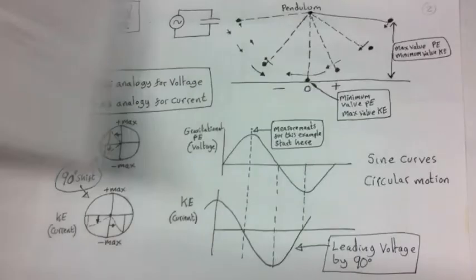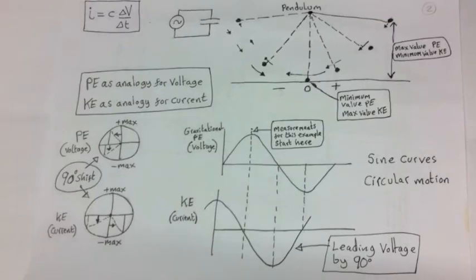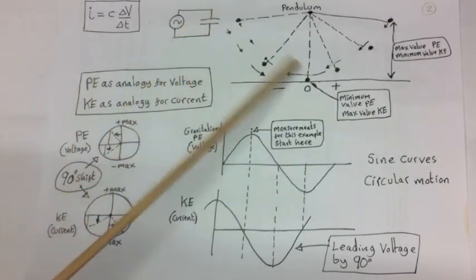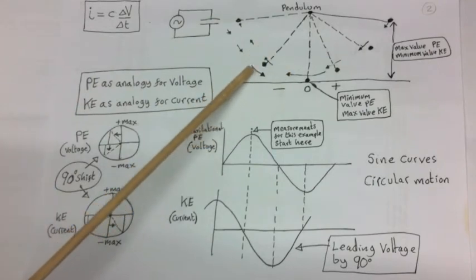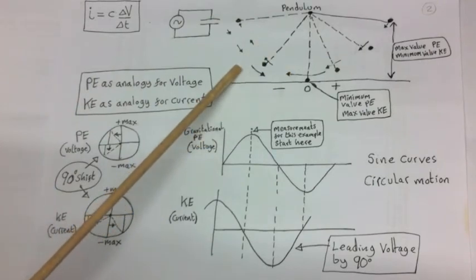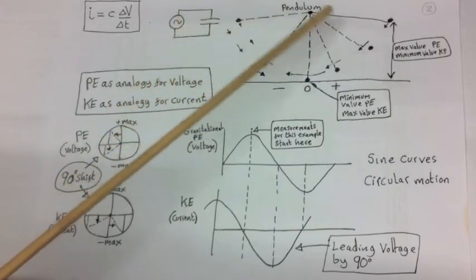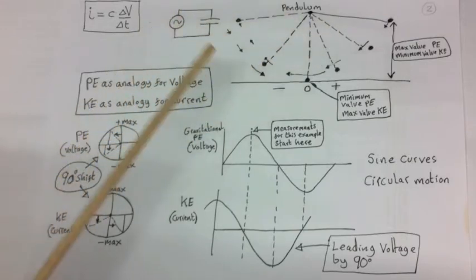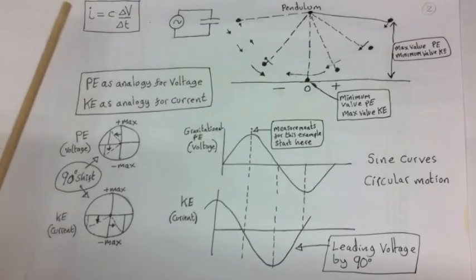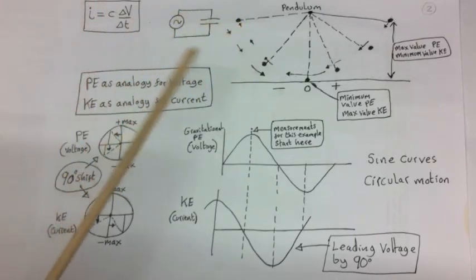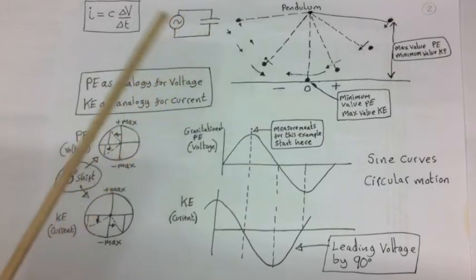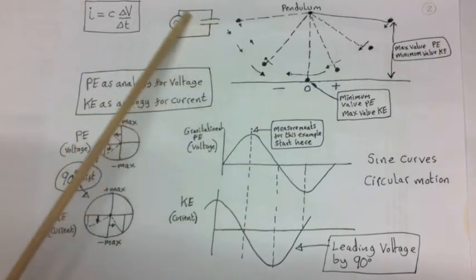Let's now assume a periodic voltage. We'll use a pendulum as a direct analogy to an ideal capacitor circuit, where gravitational potential energy is equivalent to voltage and kinetic energy is equivalent to current. This makes it easier to understand what happens in a circuit with an AC voltage and a capacitor.